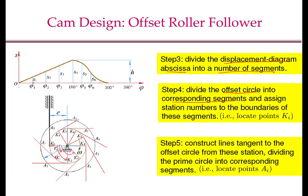We construct lines tangent to the offset circle from these Ki stations, intersecting the prime circle at corresponding points Ai. From K0 we already have A0. From K1, we draw a tangent to get A1. To disambiguate the direction, remember from the kinematic inversion principle that the follower has to rotate in the anticlockwise direction. So the whole follower shape rotates anticlockwise rigidly, determining the correct tangent direction. We draw the tangent at K2 to get A2, at K3 to get A3, and so on, locating all points Ai on the prime circle.